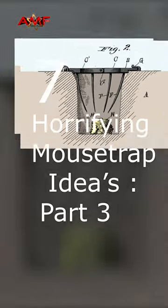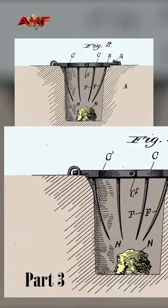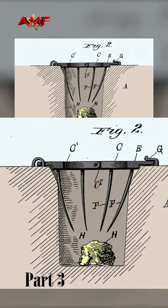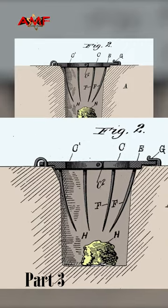7 Horrifying Mousetrap Ideas, Part 3. This trap was cut from a Saw movie. A trap that imprisons and kills a rat. How? The intended use isn't to trap the entire animal, but to impale its foot as it reaches for buried bait.